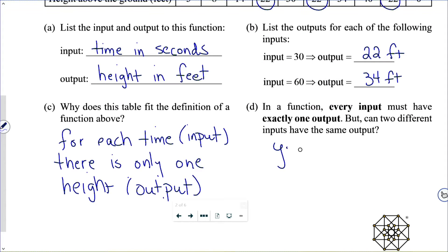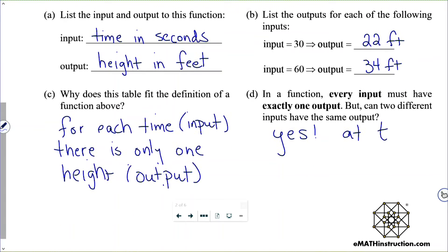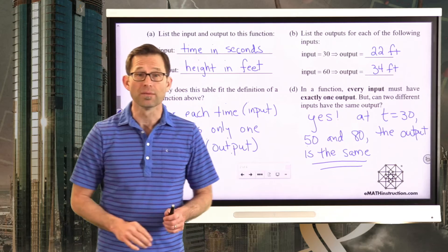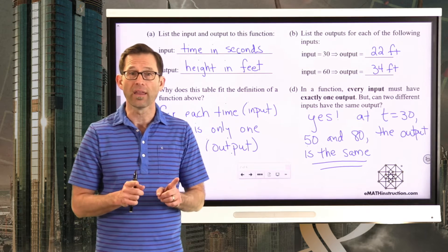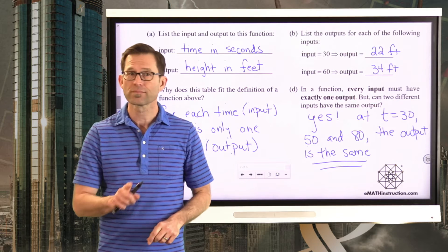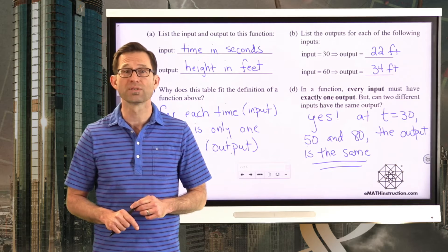Yes. At 30, 50, and 80, the height is the same. The output is the same. And that makes sense. By the way, that means that the time is not a function of the height. So if I give you a height, there could be more than one time that the kite is at that height. But if I give you a time, the kite can only have one height that it's at. Make sense? I hope.